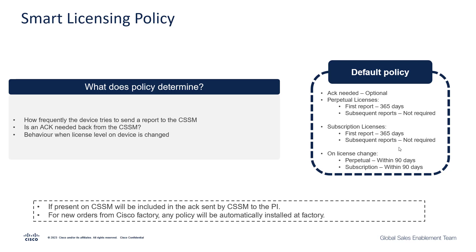For both your perpetual as well as your subscription licenses — namely your network advantage, network essentials, or your DNA advantage and DNA essentials — you need to send the first report in 365 days, but the subsequent reports are not required. However, we recommend that you send a report at least once a year to ensure that your centralized repository is not too outdated and is relatively up to date.